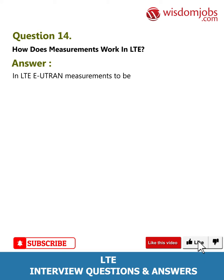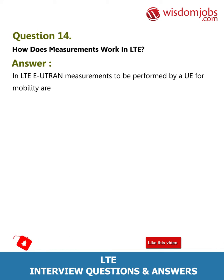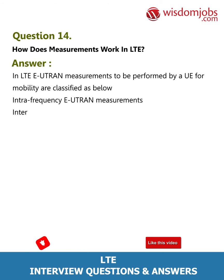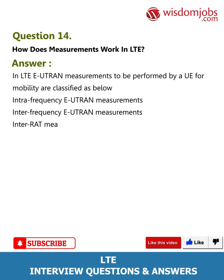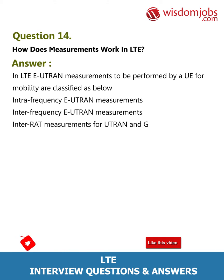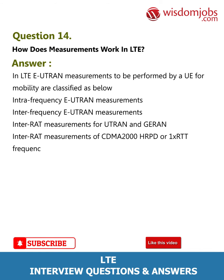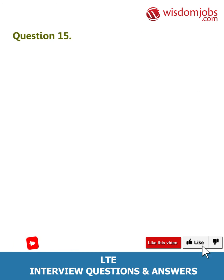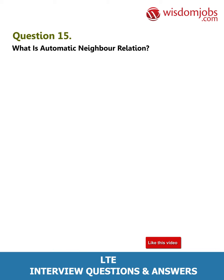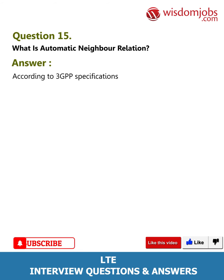Question 14: How do measurements work in LTE? In LTE, E-UTRAN measurements to be performed by a UE for mobility are classified as: intra-frequency E-UTRAN measurements, inter-frequency E-UTRAN measurements, inter-RAT measurements for E-UTRAN and GERAN, and inter-RAT measurements of CDMA2000 HRPD or 1xRTT frequencies.